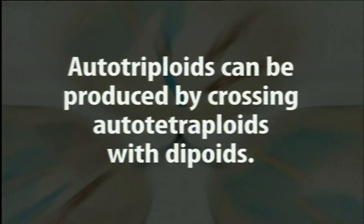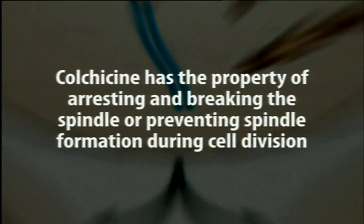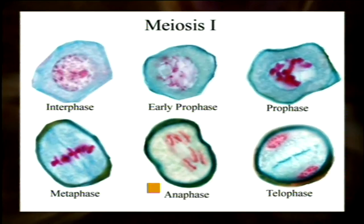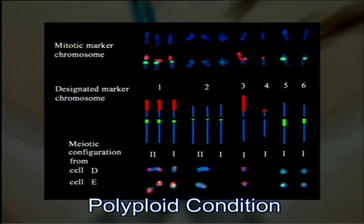Autopolyploids can also be induced artificially. Autotriploids can be produced by crossing autotetraploids with diploid individuals. However, the best method for artificial production of autopolyploids is colchicine treatment. Colchicine is a drug that arrests spindle formation — it inhibits spindle polymerization so that chromosomes cannot segregate at anaphase, leading to failure of cell division. This causes chromosome doubling within the cell, resulting in a polyploid condition.